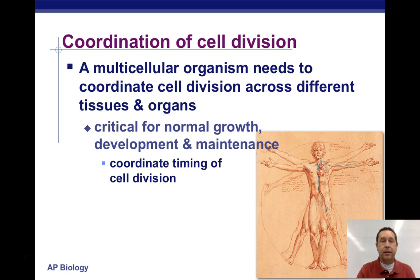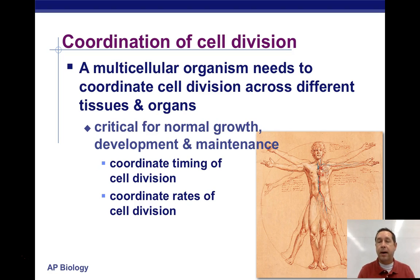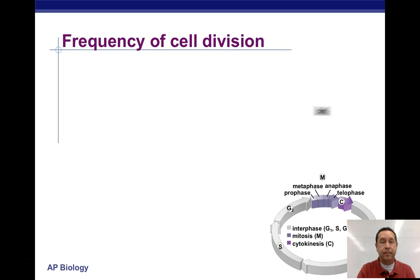There has to be some coordinated timing of cell division. The rate of cell division is also coordinated and is different in different parts of the body of a living thing. Not all cells have the same cell cycle.